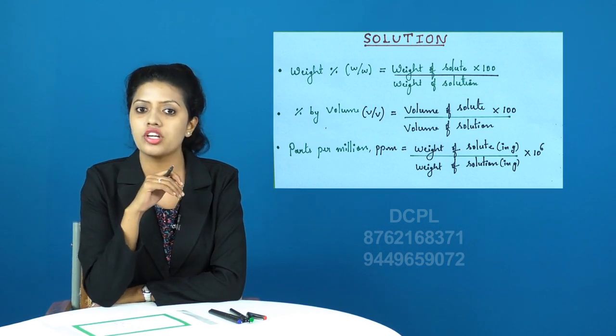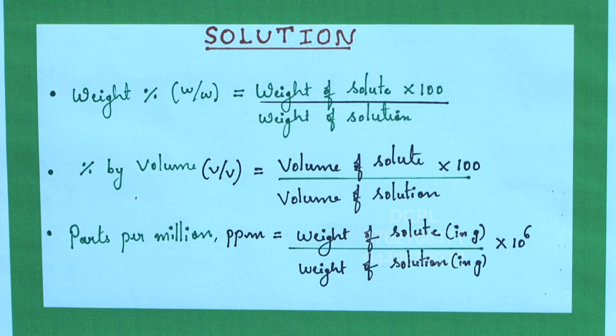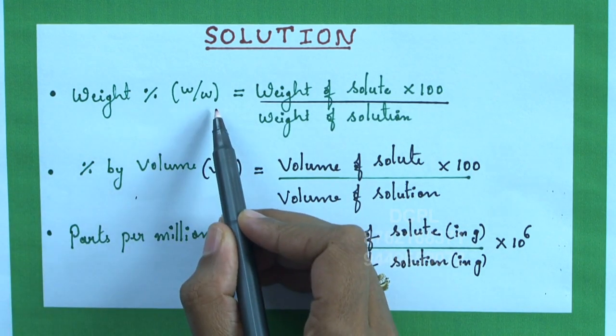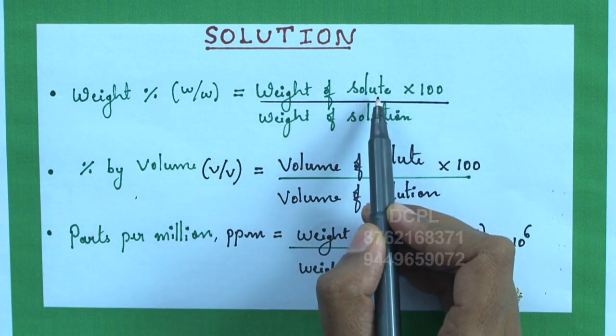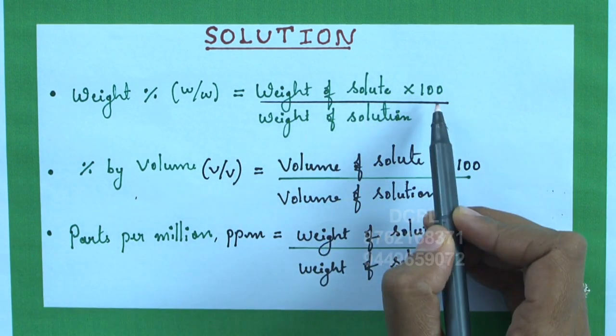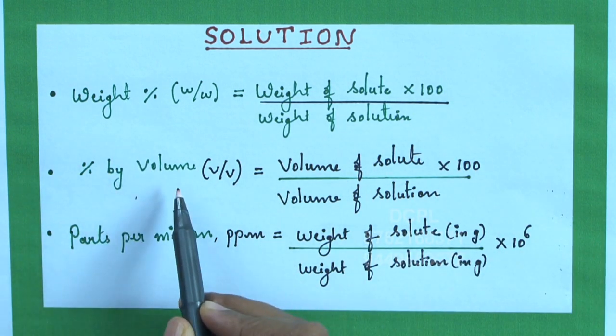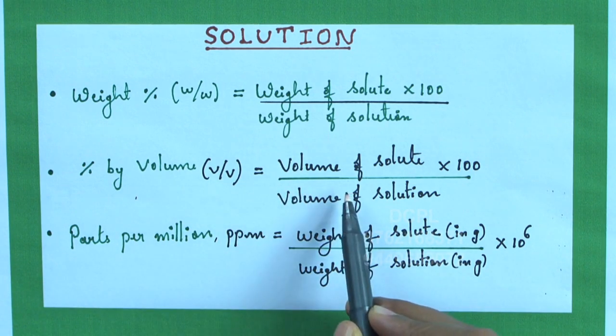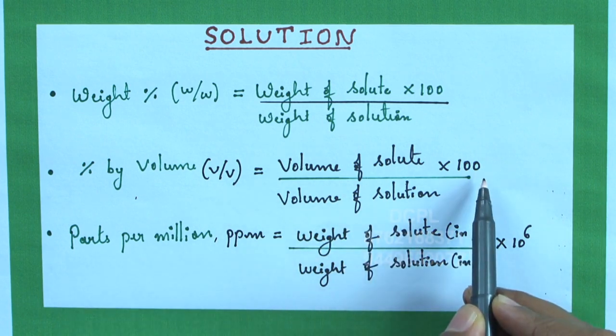Let us learn about the different ways of representation of concentration. First and foremost, we have here weight percentage which is given as W by W percentage, and the formula is weight of the solute divided by weight of solution times 100. Similarly, percentage by volume or volume percentage is given by V by V percentage equals volume of solute divided by volume of solution times 100.